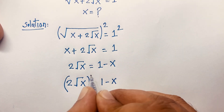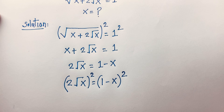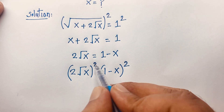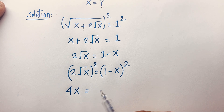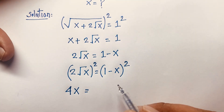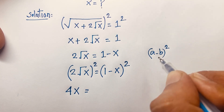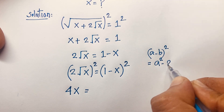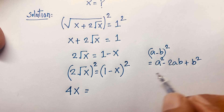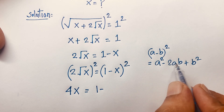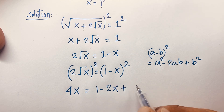I use both sides whole square again. Then 2 to the power of 2 will be 4, and the square root is cancelled. We apply the formula (a minus b) whole squared equals a squared minus 2ab plus b squared. So the right side becomes 1 minus 2 times 1 times x, which is 2x, plus x squared.